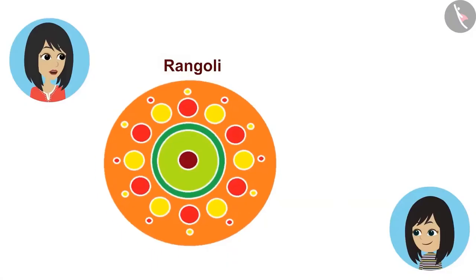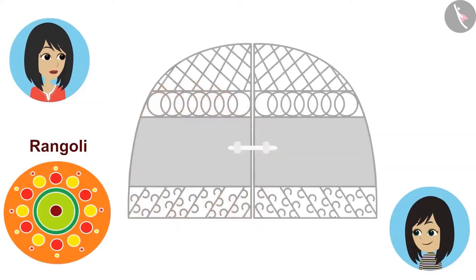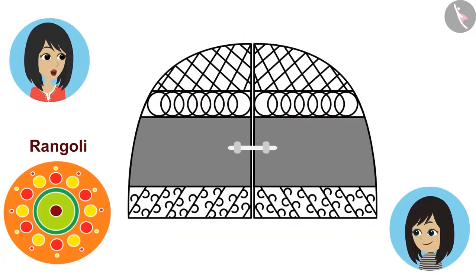In the design of the rangoli, circles are not overlapping each other. But in the design on the gate, the circles are overlapping each other.